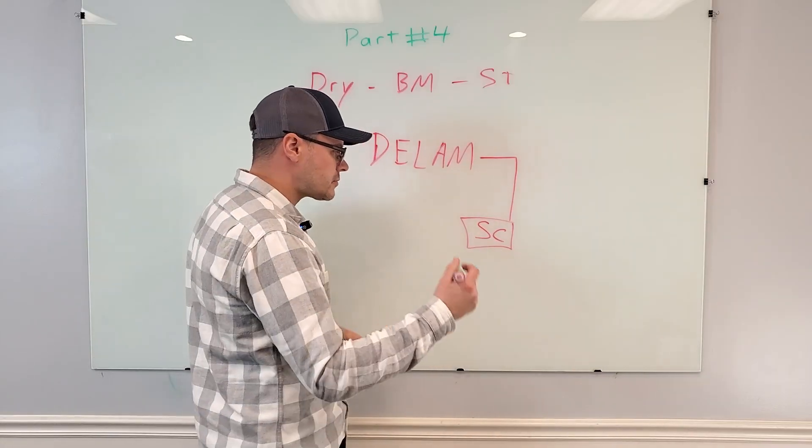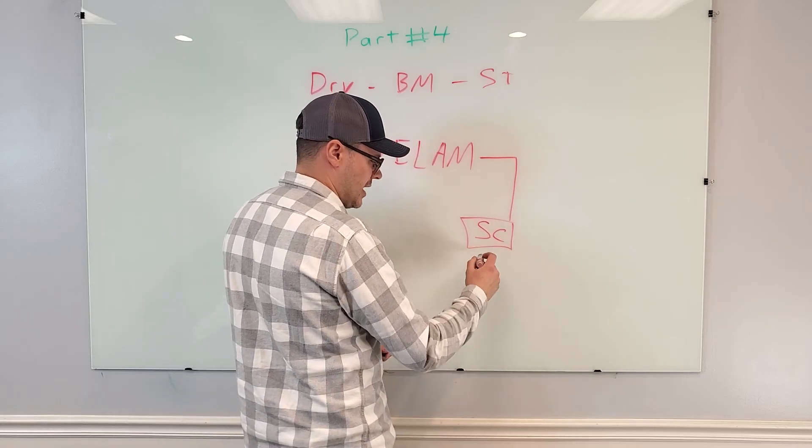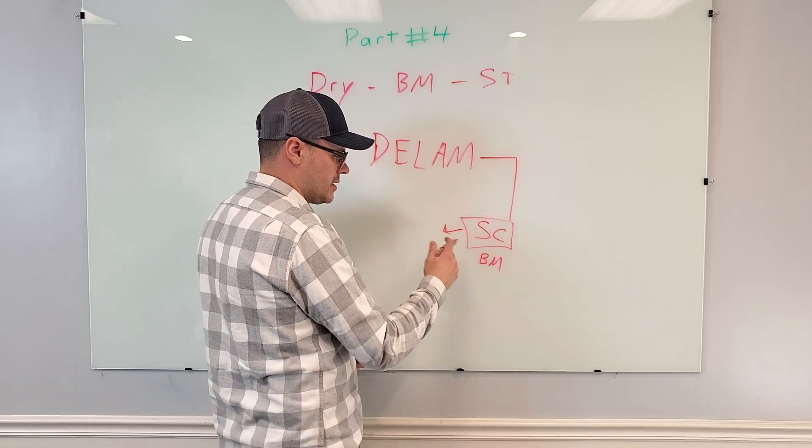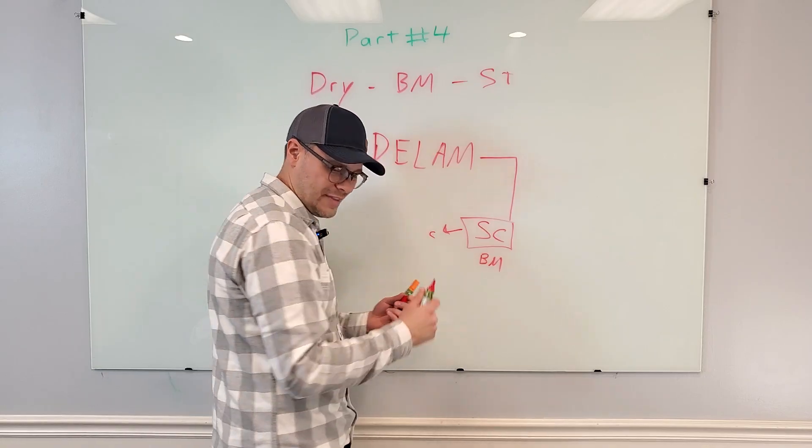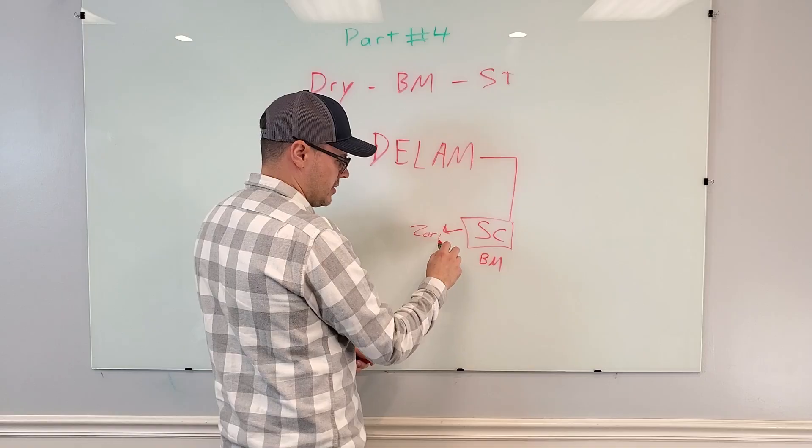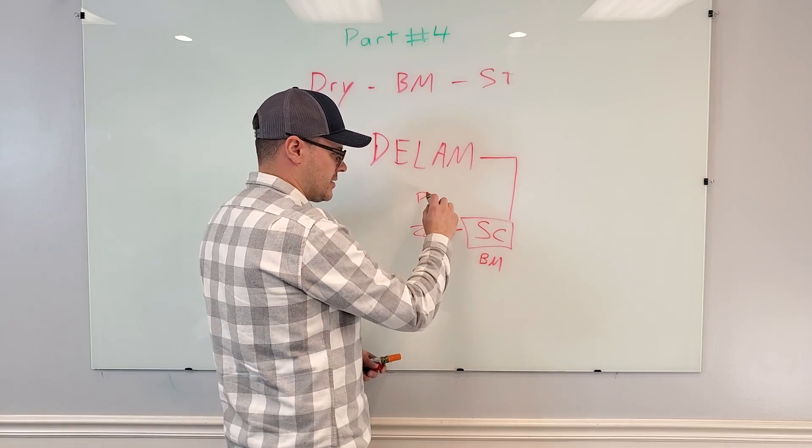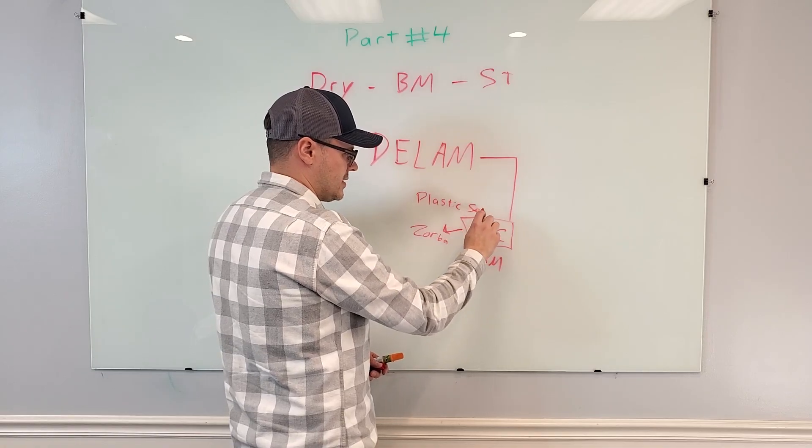So the bottom part is the black mass, BM. The middle part is your copper and your aluminum. Actually at this point we call it Zorba. And then your top fraction is your plastic separator.